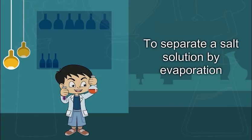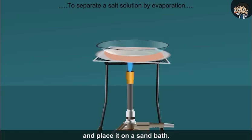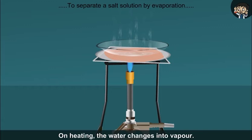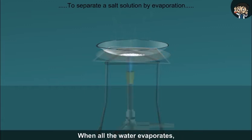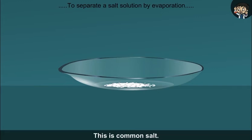To separate a salt solution by evaporation. Take some salt solution in a china dish and place it on a sand bath. On heating, the water changes into vapour. When all the water evaporates, you will see a white residue left in the china dish. This is common salt.